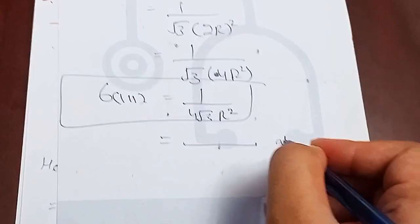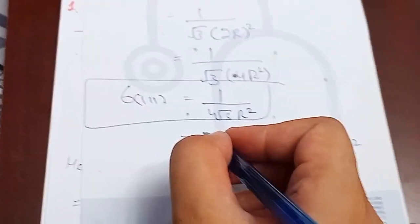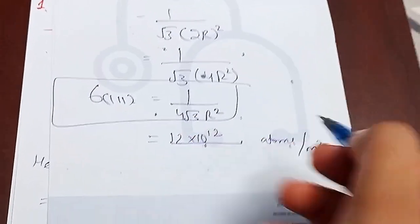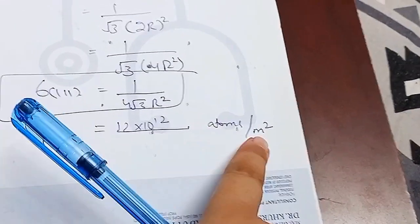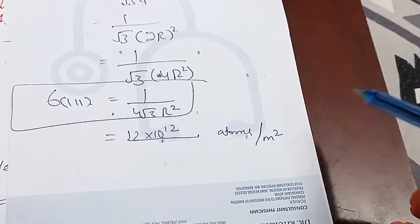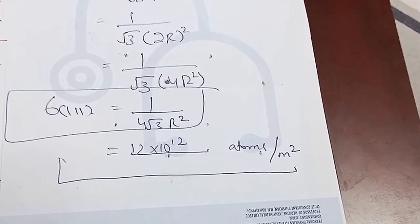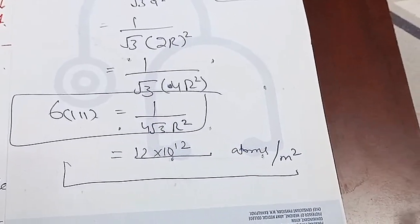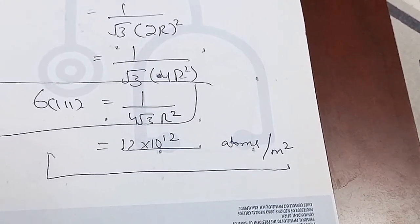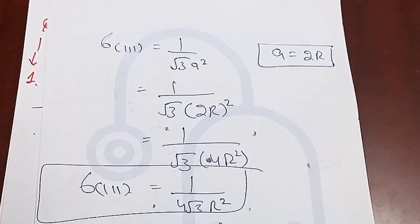The units for planar density are atoms per meter squared. For example, if you get a value like 12 × 10¹² you write atoms per meter squared as its unit. Since the count of atoms has no units itself, we write 'atoms per meter squared' to show that it represents the number of atoms on the plane per unit area.